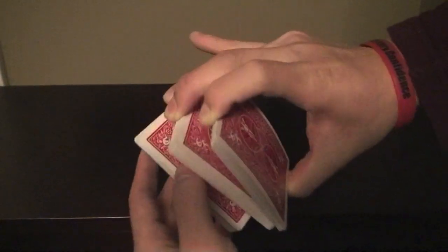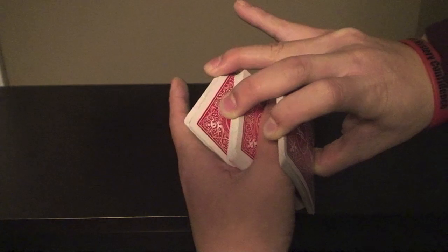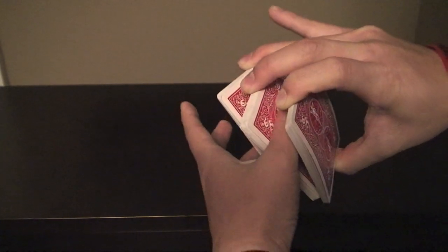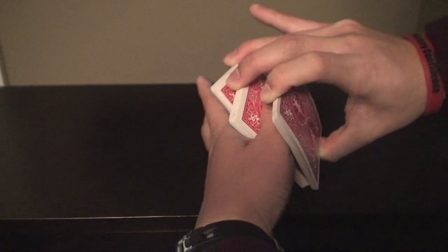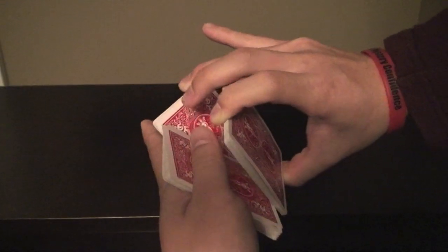So now you should be in this position and your thumb is right in between there. Then you're going to clamp down on the middle packet. You're going to clamp, close the fingers but pull out the middle packet and the middle finger here of the right hand can release.